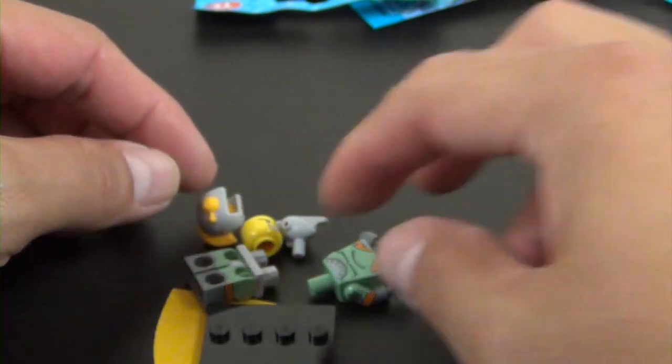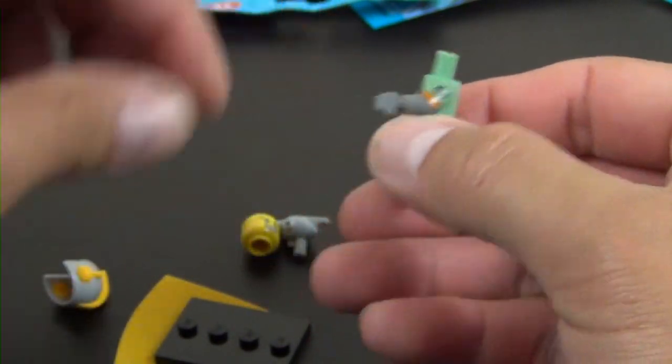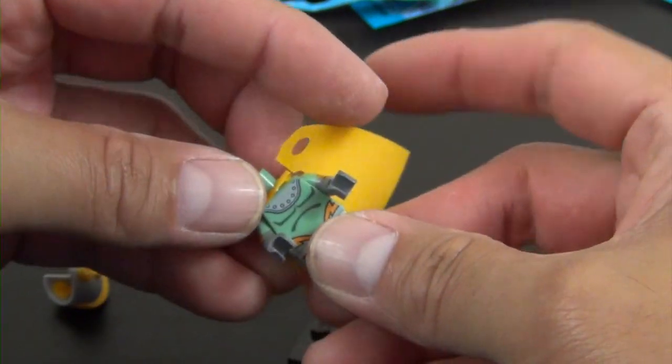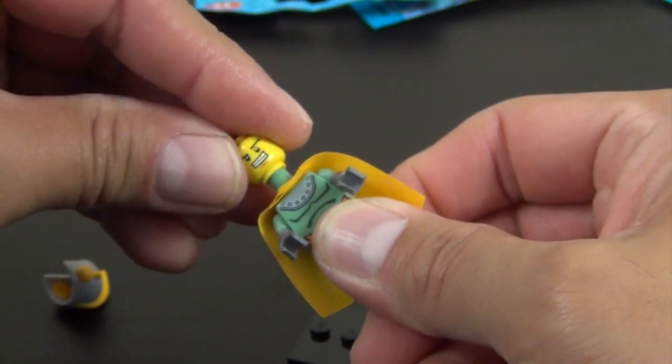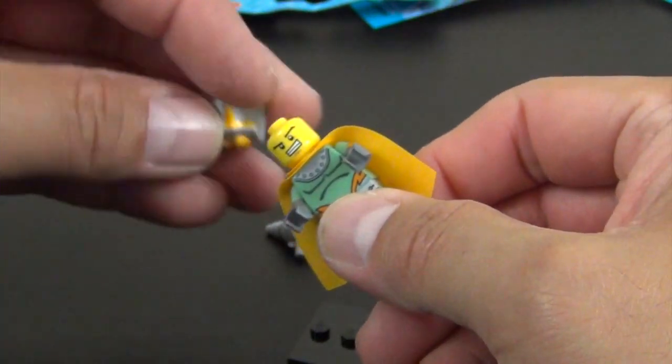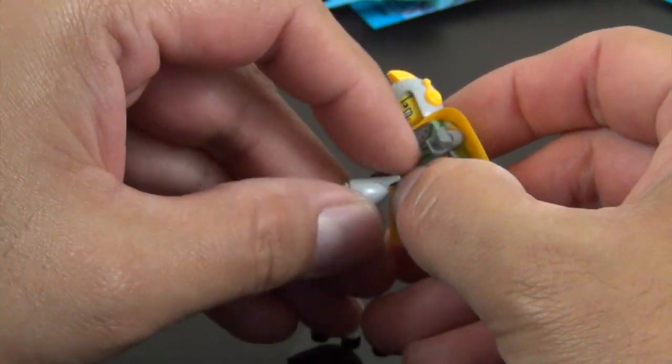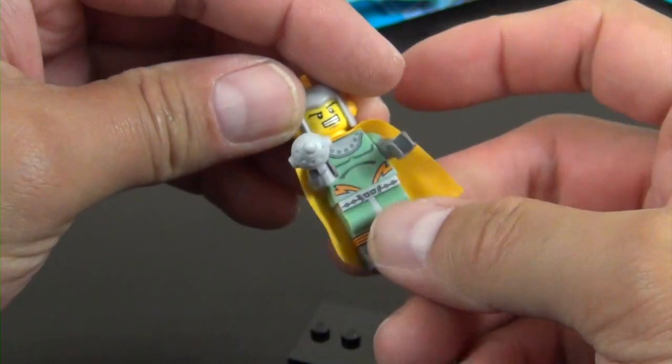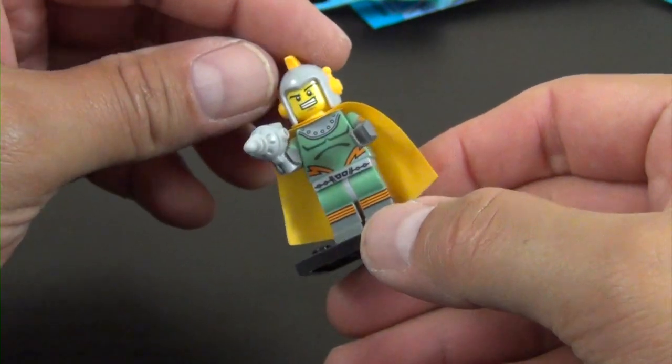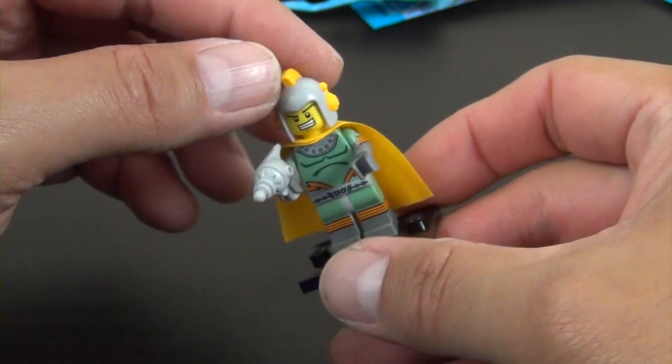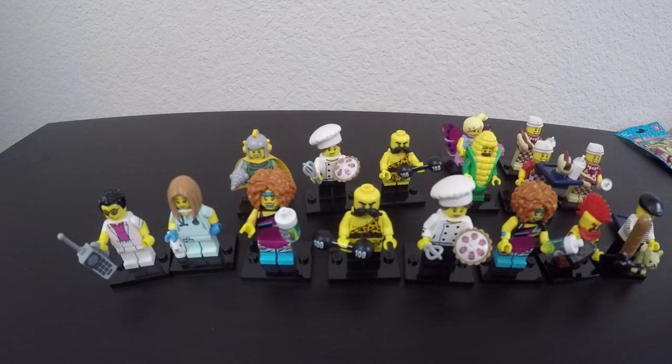Here is our retro spaceman. He has a vinyl style cape, angry face, it's a single printed face. He has this retro style space helmet and then this cool little retro style blaster. Kind of reminds me of something you'd see on an old space cartoon like the Jetsons. Cool minifigure. Maybe not one of my favorites in the set or in the series, but nonetheless it's not a bad minifigure.